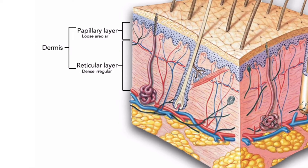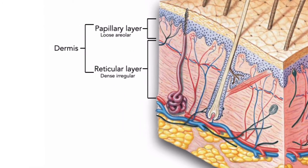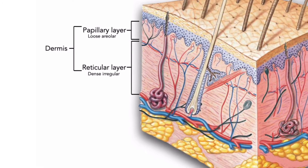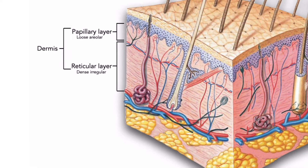The deeper reticular layer consists of an interwoven meshwork of dense irregular connective tissue containing both elastic fibers and collagen fibers. The elastic fibers provide flexibility, and the collagen fibers limit that flexibility to prevent damage to the tissue. Bundles of collagen fibers blend into those of the papillary layer above, blurring the boundary between these layers. Collagen fibers of the reticular layer also extend into the deeper hypodermis.